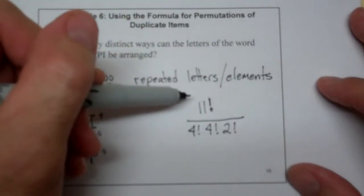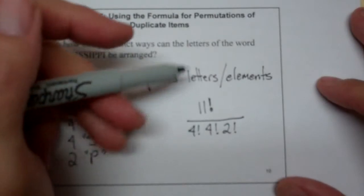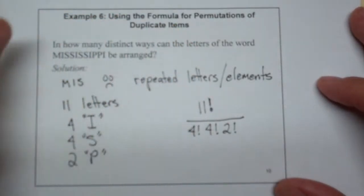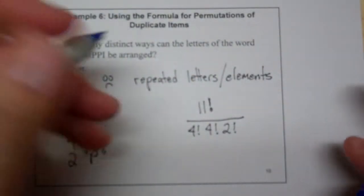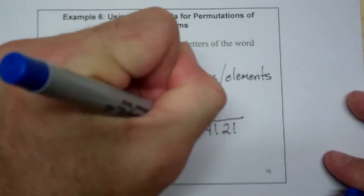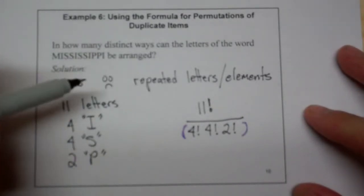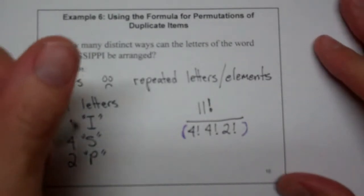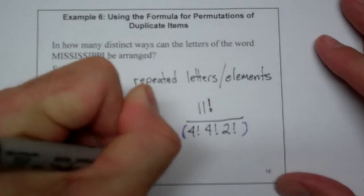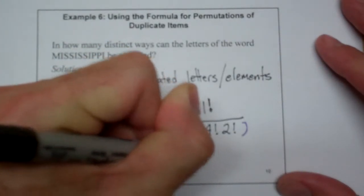Now you could do this a couple of different ways of simplifying this. But I think that as long as you use parentheses in the denominator you are good to go for dividing this in your calculator. And you should do that now because the answer you should get should be thirty four thousand six hundred fifty.